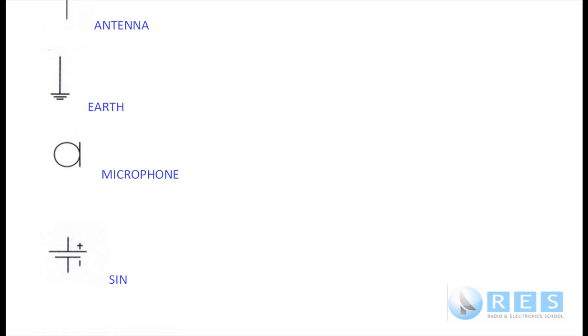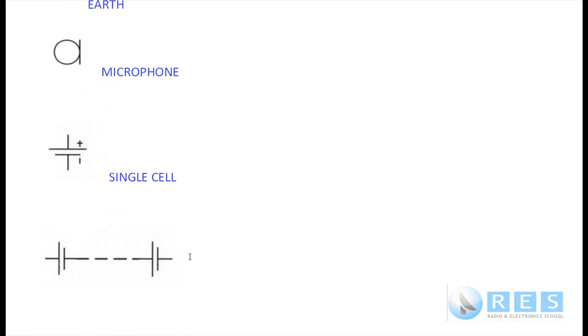Next symbol is a single cell. That could be a double A or triple A cell, or a cell out of a calculator. When you have a group of cells together, you have a battery.